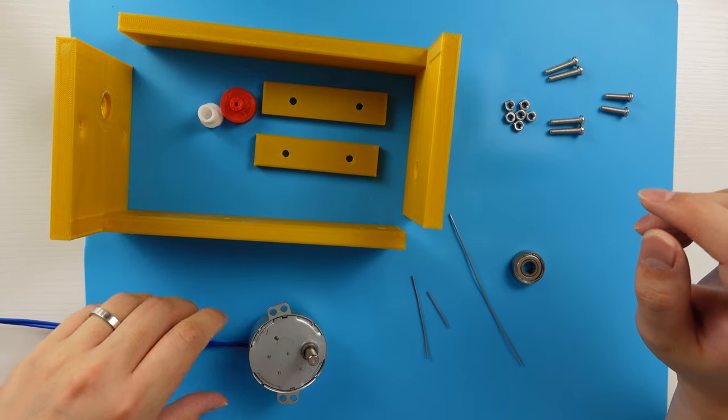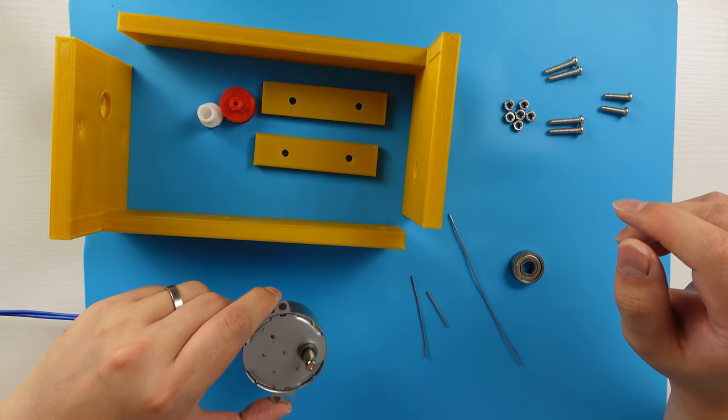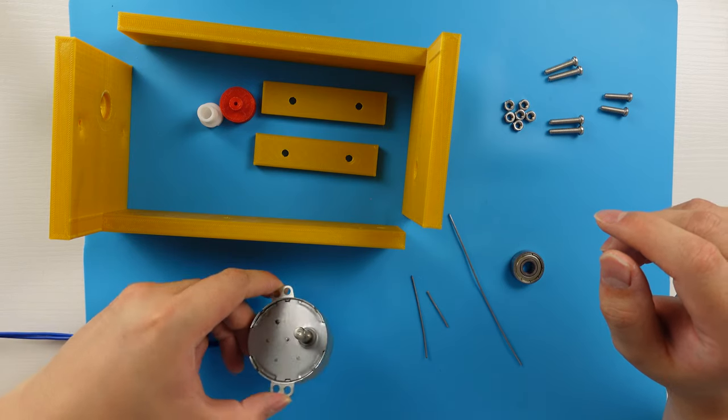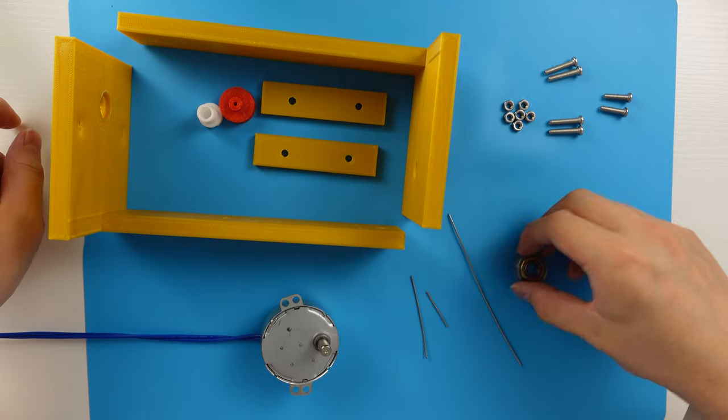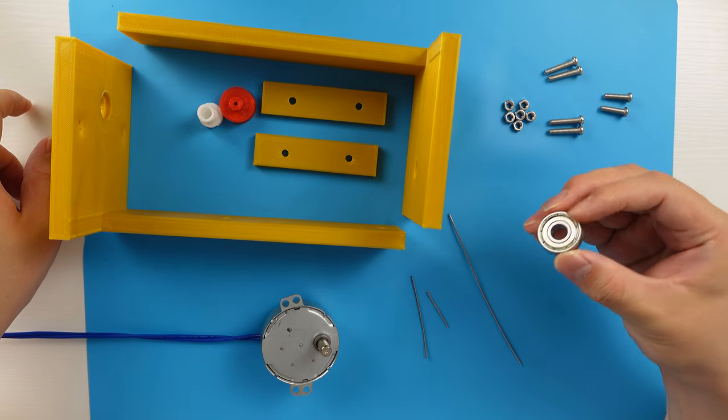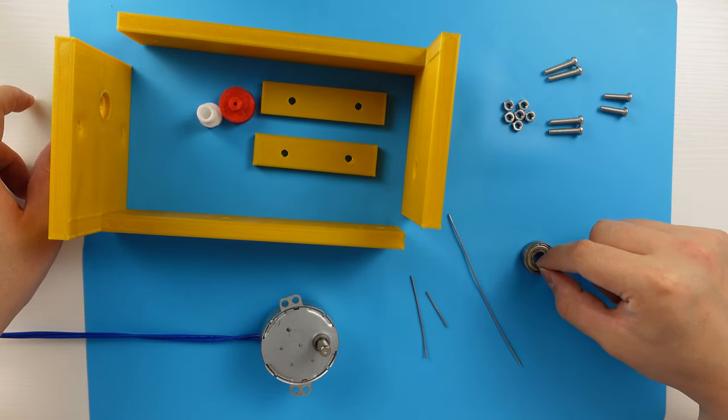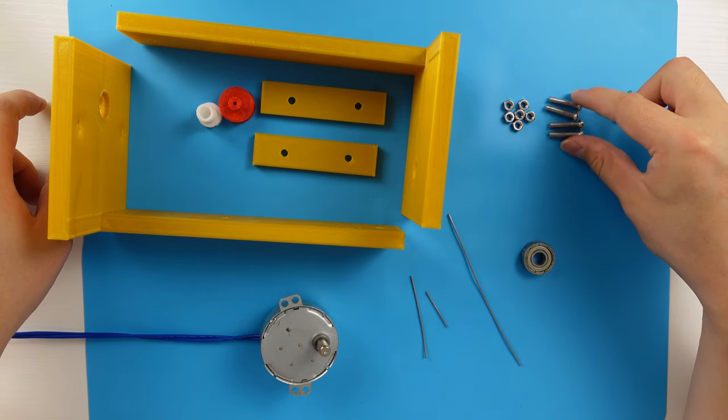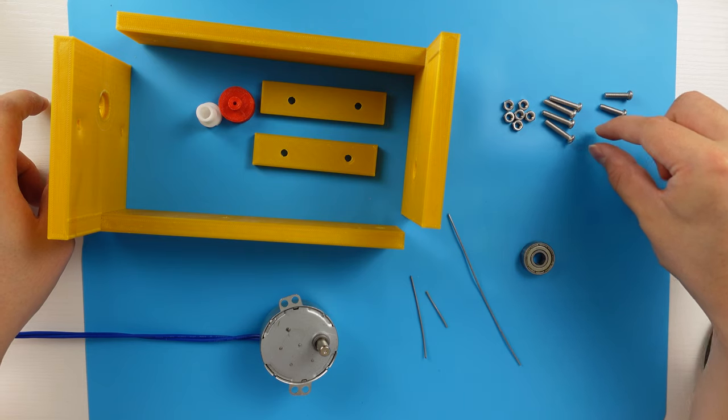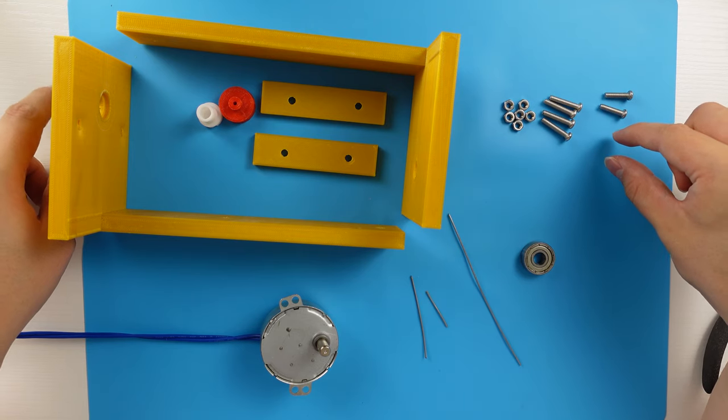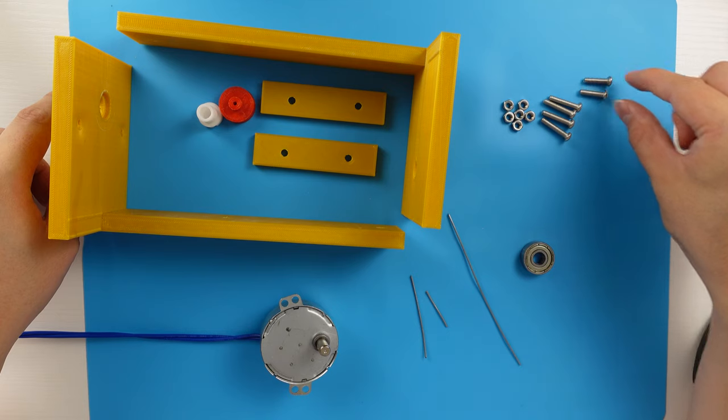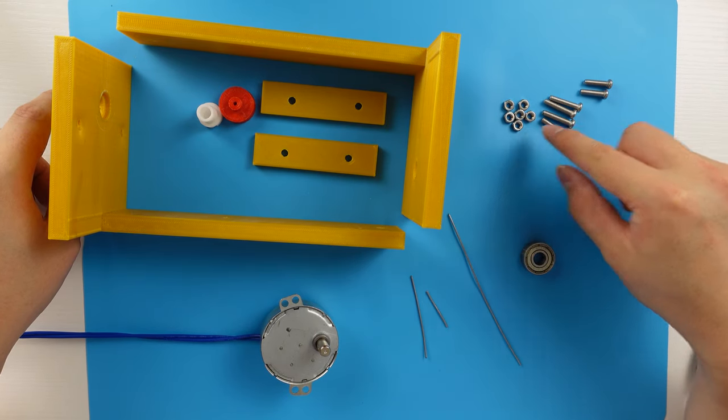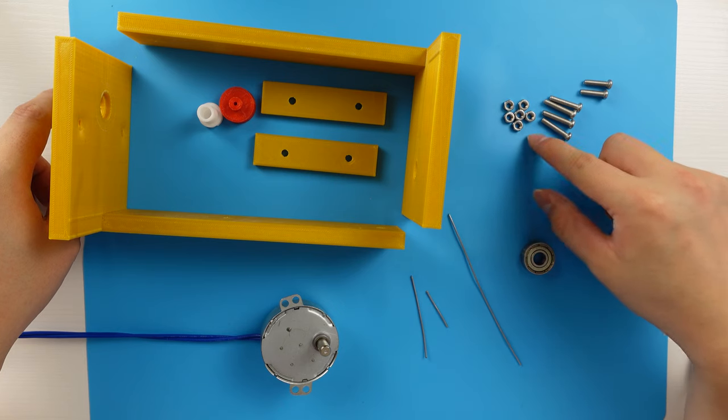This is a slow rotating motor. It's about 3 rounds per minute. And you also need a ball bearing. You need some screws. Four 20 millimeter long M4 screws and two 16 millimeter long screws. And 6 nuts, M4 size nuts.